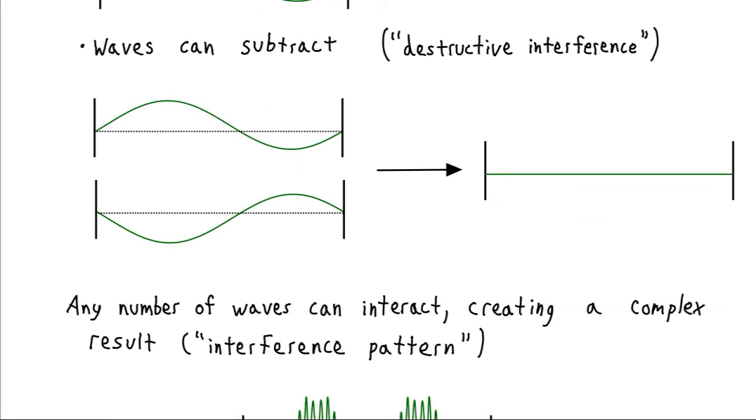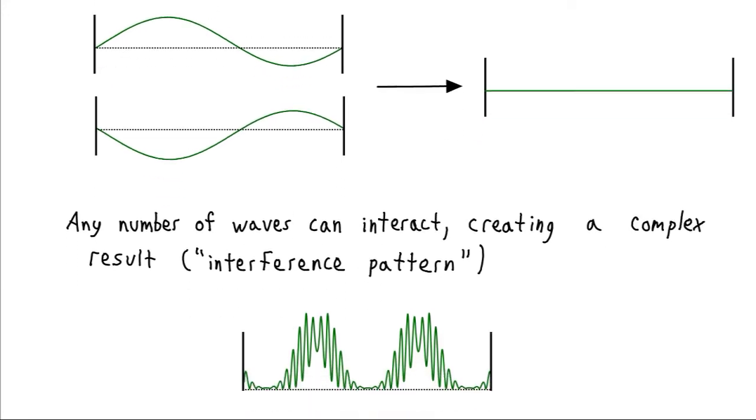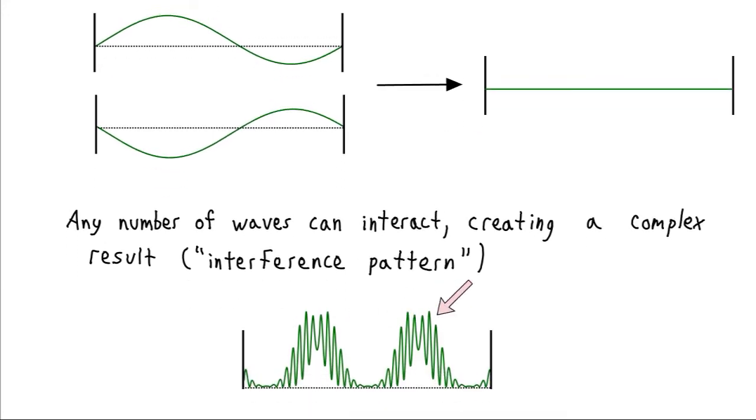Well we can have any number of waves add together. We can have hundreds or thousands of different waves with different shapes all adding together to give us our final result. And so that final result is called an interference pattern. And it can become fairly complex when we have lots of individual waves adding together.